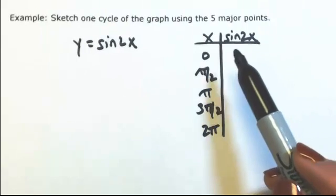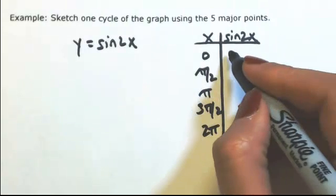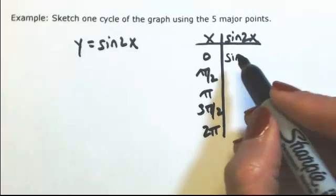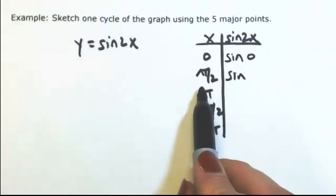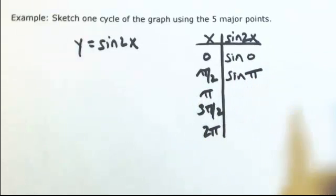So the first thing I'll do is multiply each of these inputs by 2. So we would have the sine of 2 times 0, which is just 0. Then 2 times pi over 2, the 2's would cancel, so this is sine of pi.